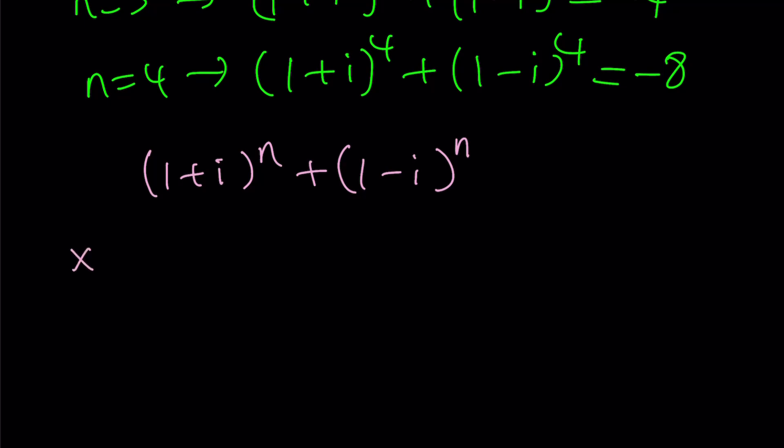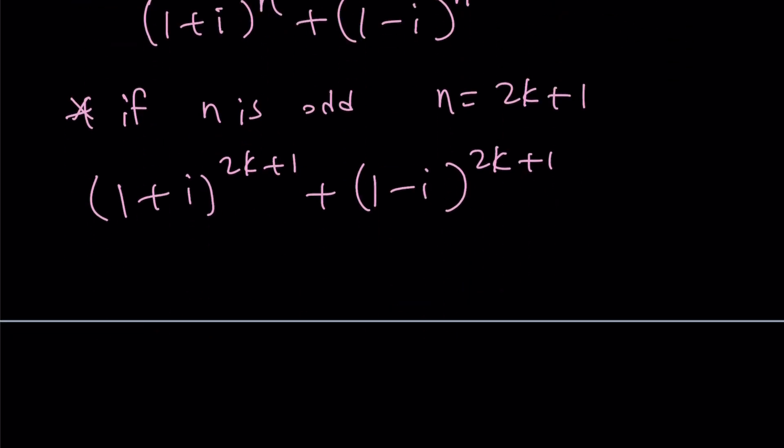So, we have 1 plus i to the n plus 1 minus i to the n. And then, n is an integer. And we tested some values. So, hopefully, we got some ideas. So, what happens, for example, if n is odd? If n is odd, then this means n can be written as 2k plus 1, such that k is an integer too. 2k plus 1 is always odd if k is an integer. And then, if you plug it in, you're going to get something like this. You know, with these kinds of problems, like, kind of like number theory, divisibility issues, right? Parity. You plug it in, and then it will give you some insights. Now, here, notice that we can separate these into 1 plus i to the 2k times 1 plus i. And then, the same thing with 1 minus i.